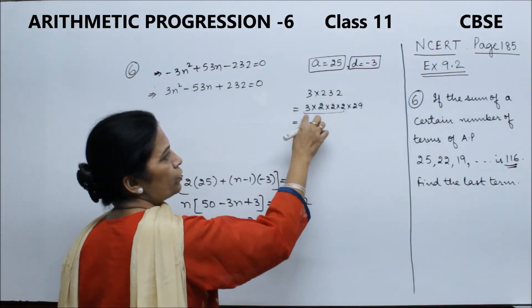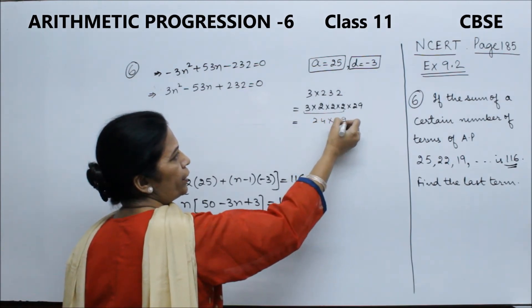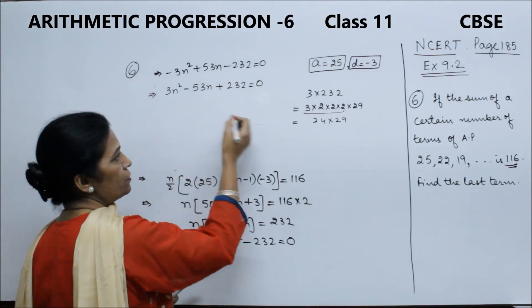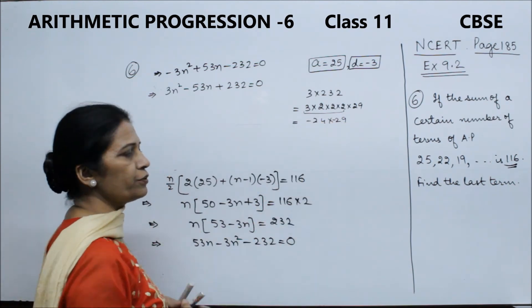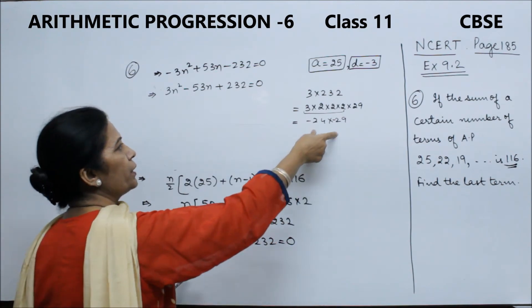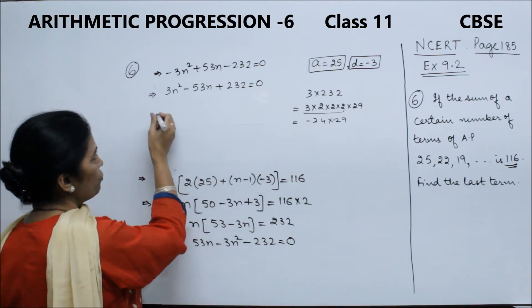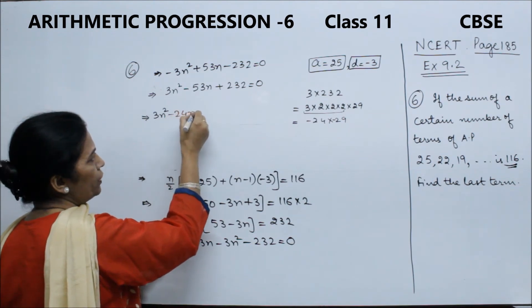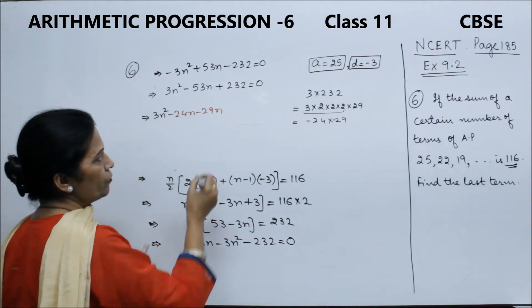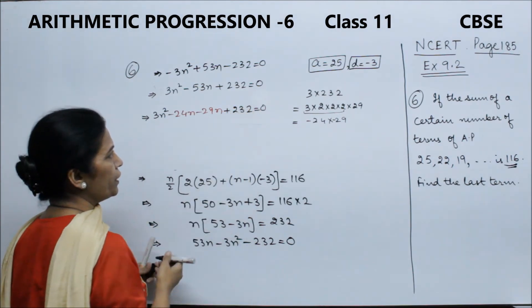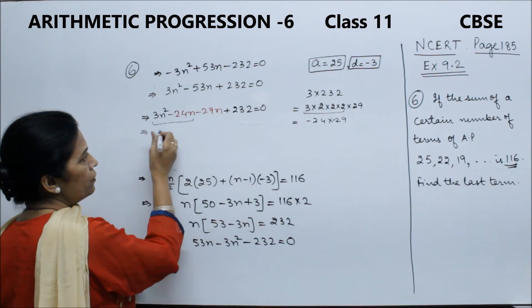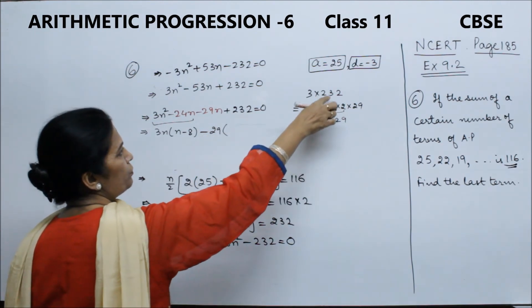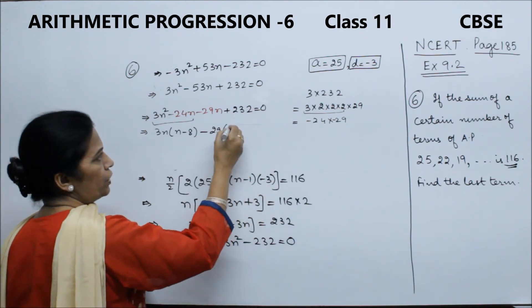Now, 3 times 24 equals 72, and 29. So 24 and 29 add to give 53, but I need minus. So we split the middle term: 3n square minus 24n minus 29n plus 232 is equal to 0. Then we take common: 3n is common, so n minus 8, and minus 29 common, so 3n minus 29, times n minus 8, is equal to 0.